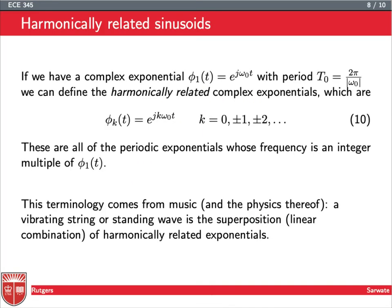If we have a complex exponential that's, say, e to the j omega naught t, and it's got period T naught, which is 2 pi over omega naught, then what you can do is you can define what are called harmonically related complex exponentials. So, those are just complex exponentials with frequencies that are multiples, integer multiples, of omega naught. And you can think of this in terms of music. It's basically saying you double the frequency and you get an octave above the omega naught, and then if you double it again, you get an octave and a fifth, and so on.